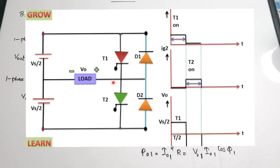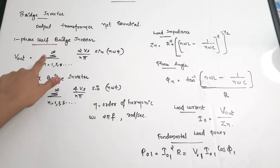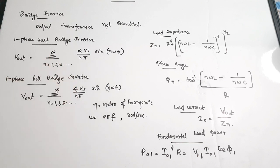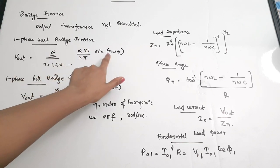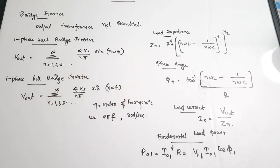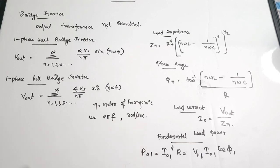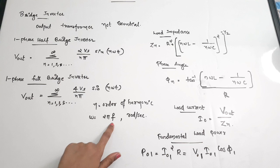You can see there is no requirement of a transformer. The output voltage equation is: Vout = Σ (n=1,3,5,…,∞) [2Vs / (nπ)] sin(nωt), where Vs is the source voltage, n is the order of the harmonic, and ω is the angular frequency given by 2πf in radians per second.